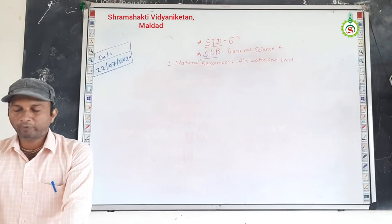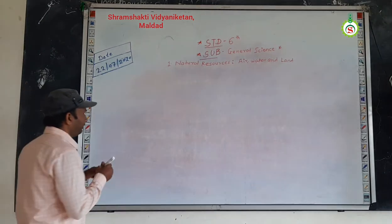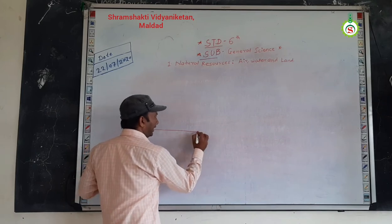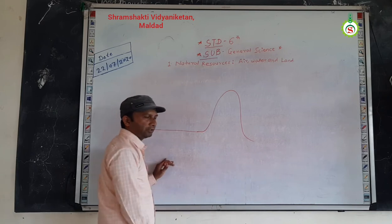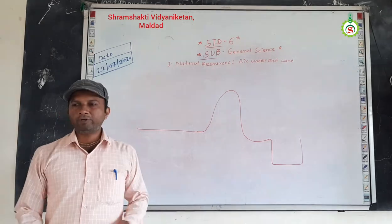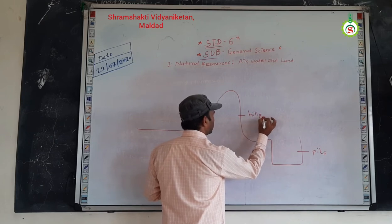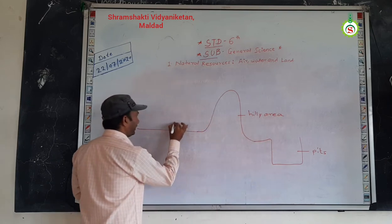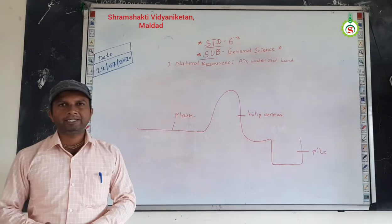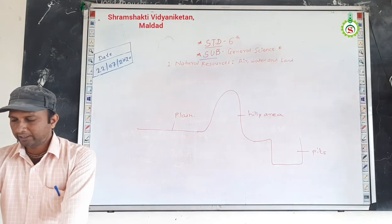During the last lecture, we discussed the questions on page number 5. I also told you that land is not even everywhere. Everywhere the land is sometimes in the form of mountains or hilly areas, and sometimes there are some pits. The area of land is not even everywhere. Land is in the form of stones, hilly areas, and it consists of fields.